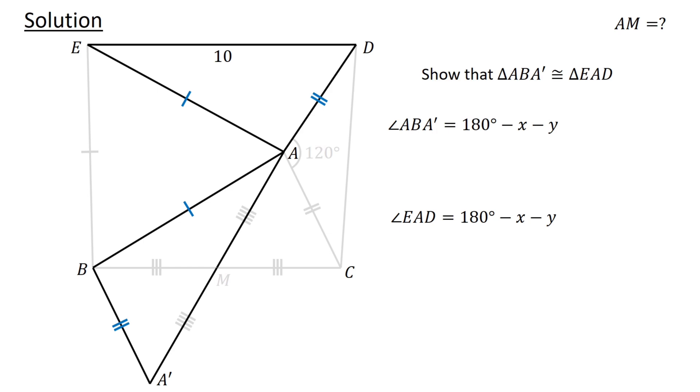Going back to triangles ABA' and EAD, since angles ABA' and EAD both equal 180 degrees minus X minus Y, angle ABA' equals angle EAD.